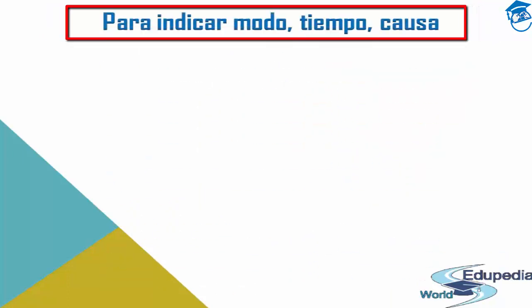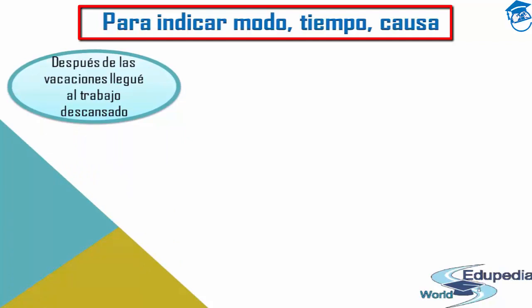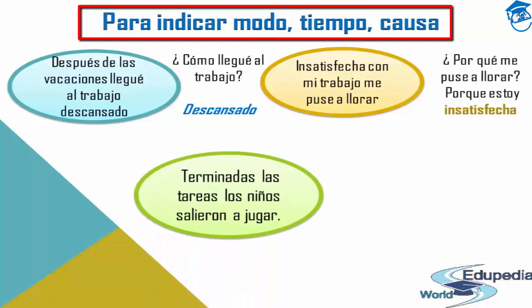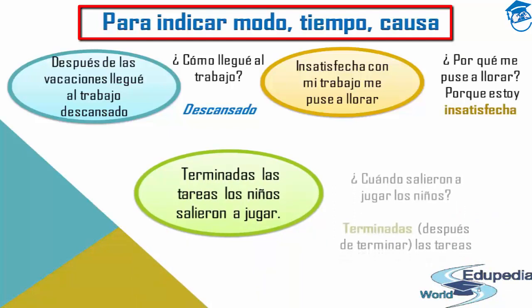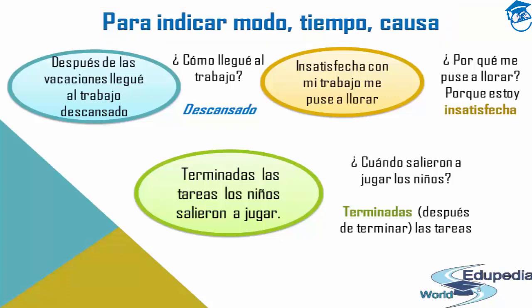The past participle can also be used to indicate mode, time, or cause — modo, tiempo, causa — showing how, when, or why something is done. For example: 'Después de las vacaciones llegué al trabajo descansado' — after the vacation I came to work relaxed. And 'insatisfecha con mi trabajo me puse a llorar' — unsatisfied with my work I started to cry. 'Descansado' is the regular past participle of 'descansar,' and 'insatisfecha' indicates the cause.